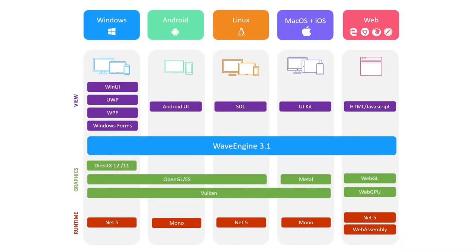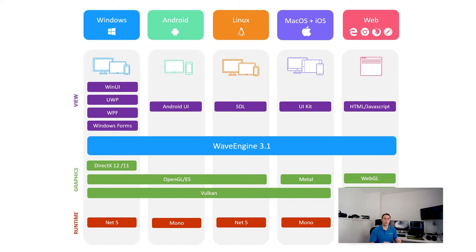After 32 releases, we have just released Wave Engine 3.1. At the bottom of the architecture diagram, you'll find the latest innovations from Microsoft, including .NET 5 and C# 9. We are using .NET 5 on all platforms where it is possible, and Mono where it is not. Next year with .NET 6, we will use only one runtime and one compiler for all supported platforms. On top of this, you'll see popular 3D low-level graphics APIs: DirectX 12 from Microsoft, Vulkan from Khronos Group, and Metal from Apple.